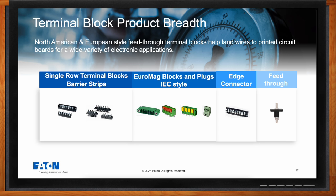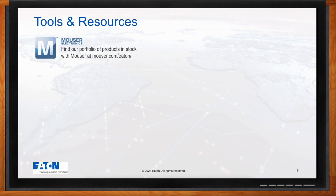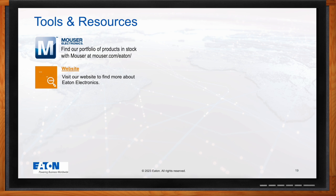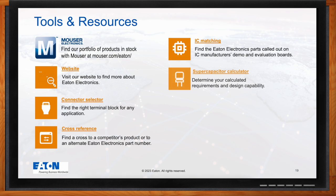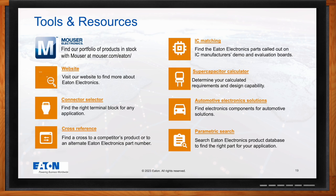One option for obtaining Eaton Electronics products is through Mouser, a distributor that offers a comprehensive selection and typically stocks a wide range of Eaton Electronics components for immediate delivery. Please also visit eaton.com/electronics to access helpful tools including parametric search, cross references, supercapacitor calculator, user guides, white papers, and datasheets. These resources assist with product selection, design, and application requirements, making it easier to find the right components for your IoT projects.